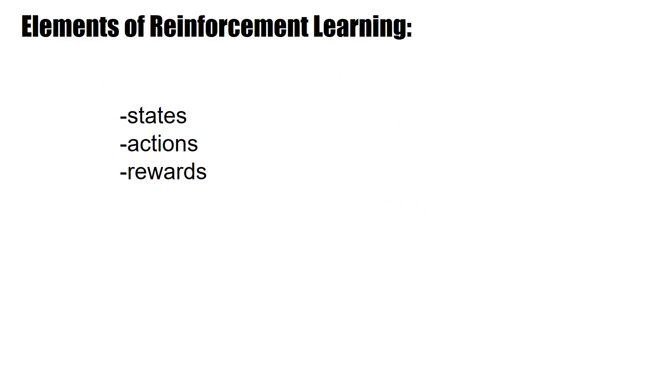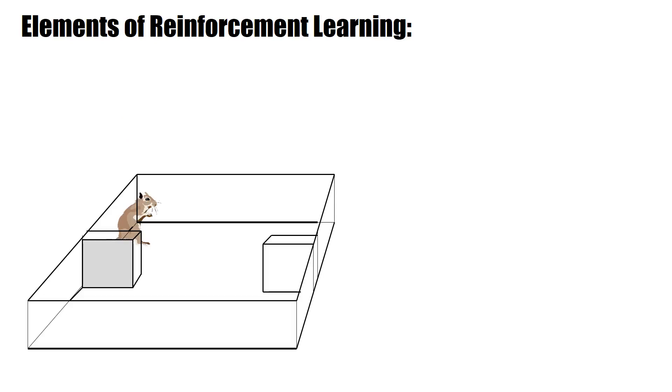These elements are states, actions, and rewards. Suppose we put an animal into this environment, it starts to explore, and it walks around, it explores different states, and finally it finds the reward. And then later you put it back, and it will go much more directly towards the reward site.